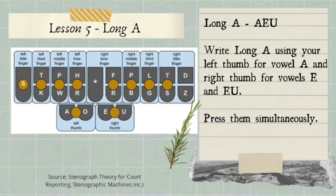And we move on to the last lesson in this video: lesson five, we have long A. Long A — the strokes are vowels A, E, and U. Write long A using your left thumb for vowel A, and right thumb for vowels E and U. So we press them simultaneously. Again: left thumb for vowel A, and right thumb for vowels E and U. So long A is vowels A, E, and U pressed simultaneously.